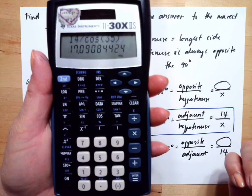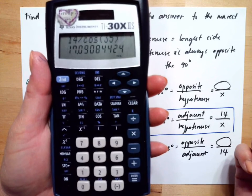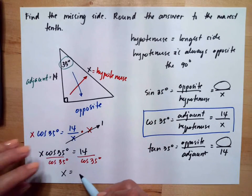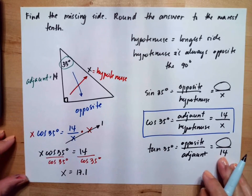And we need to round to the nearest tenth. So one decimal point. So this will be 17.1. So our x is 17.1.